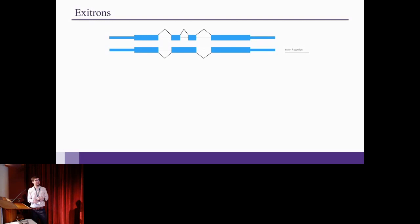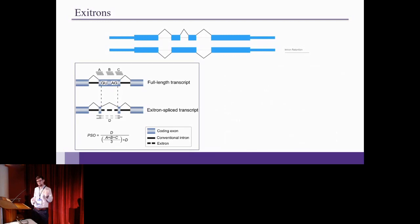An exotron is basically the reverse of a retained intron. So basically in the full-length transcript you have a full exon, and an exotron is basically a splicing of a region of an exon, such that there is a new intron within that exon. So the intron is fully contained within the exon, and that region is spliced out. So in the exotron spliced transcript, we calculate PSO. You've heard a bunch of terms of PSI. In terms of exotrons, we call it PSO because it stands for percent spliced out, because the intron is spliced out instead of spliced in, like in intron retention.